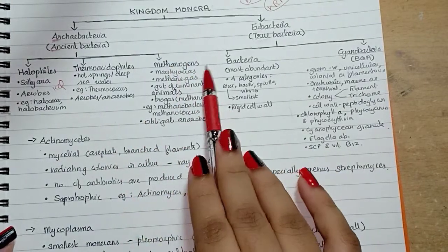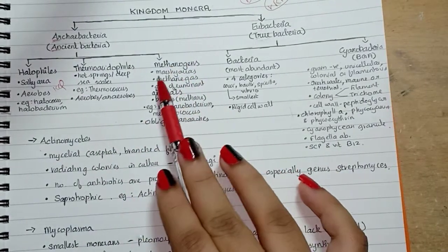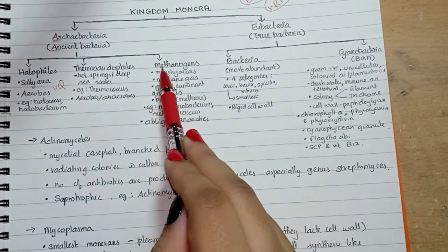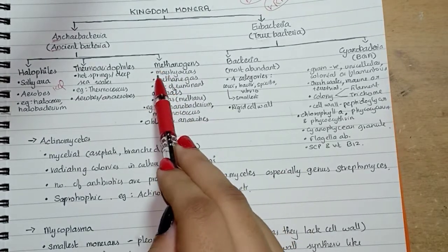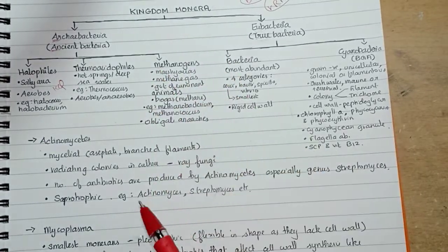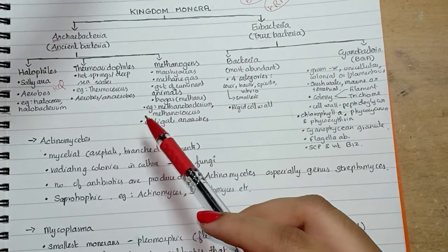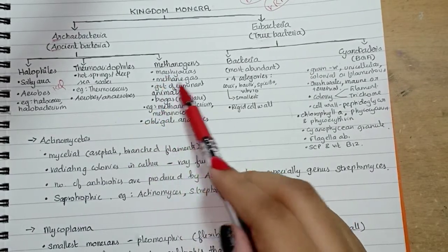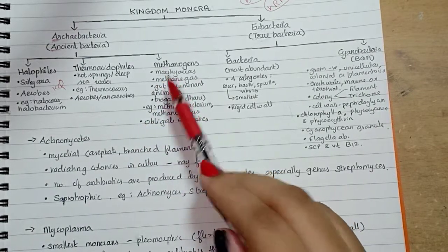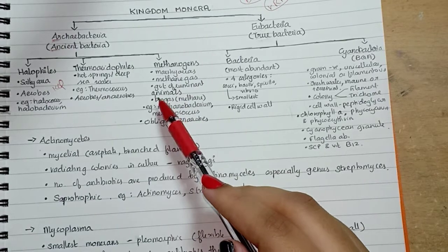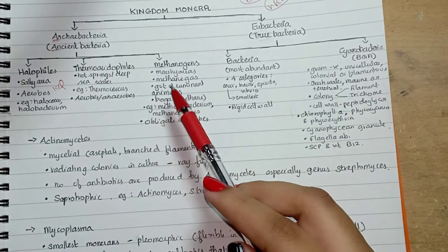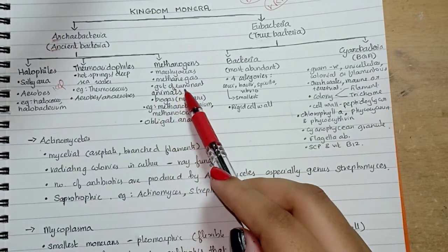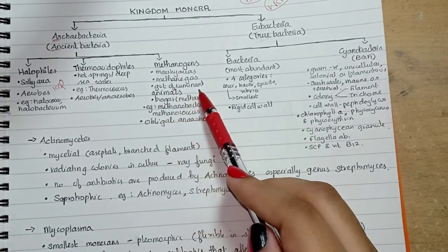Next we have methanogens — this is very important. They live in marshy areas and produce methane gas. Methanogens are present in the gut of several ruminant animals like cows and buffaloes.